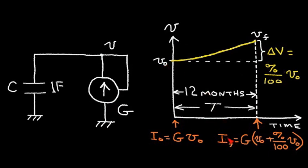Now over here, we have the expression for the current in this current source at the final condition VF. I'll call it I sub F is equal to the G times the final voltage. And the final voltage is V0 plus the delta V. And the delta V is this expression percent divided by 100 times V0, which goes into this location.